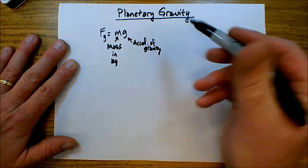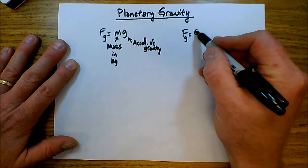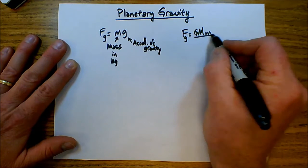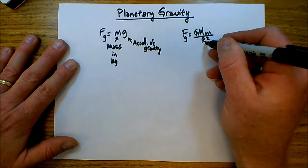We also have another formula for the force of gravity and that's Newton's law of universal gravitation. Force of gravity equals big G. Here I'll use a big M for the mass of the planet and a little m for the mass of an object over r squared where r is the distance between centers of the two objects.